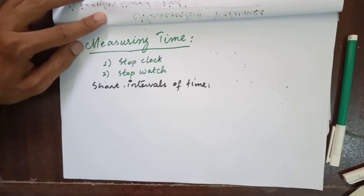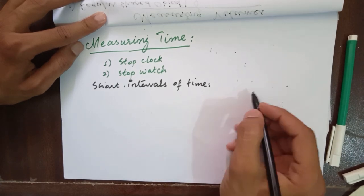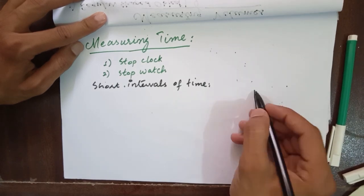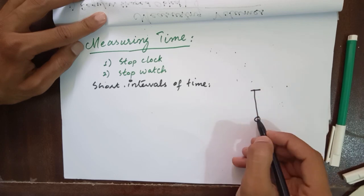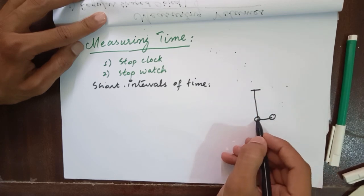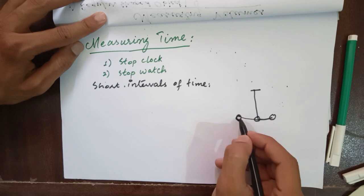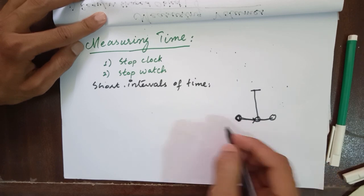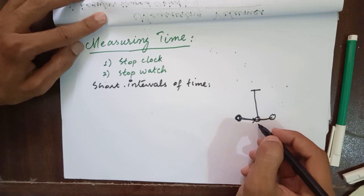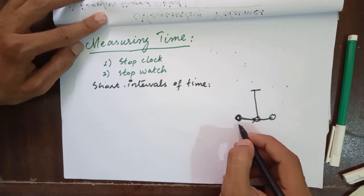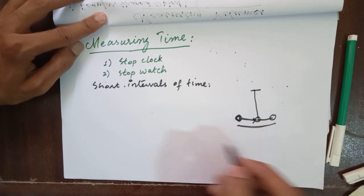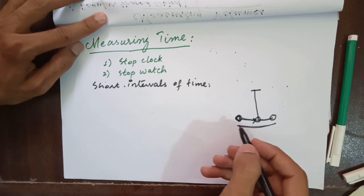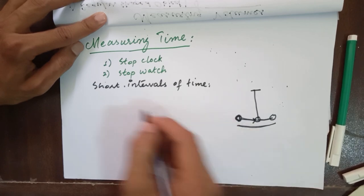For example, if a pendulum, the one swing of a pendulum, when it moves from here and then back and then goes to its extreme left position and then comes back to the mean rest position. This one cycle, the time the pendulum takes for completing this one cycle is called the period.